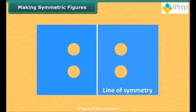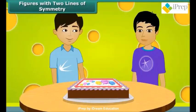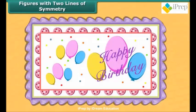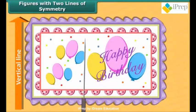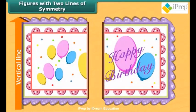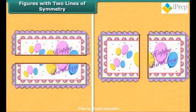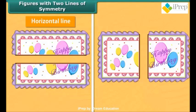Manu and Mrinal each have a rectangular cake, and each wants an exact half. The cake can be divided in two ways to give equal halves. It can be divided along the horizontal line so that its two halves match each other, and it can also be divided along the vertical line.